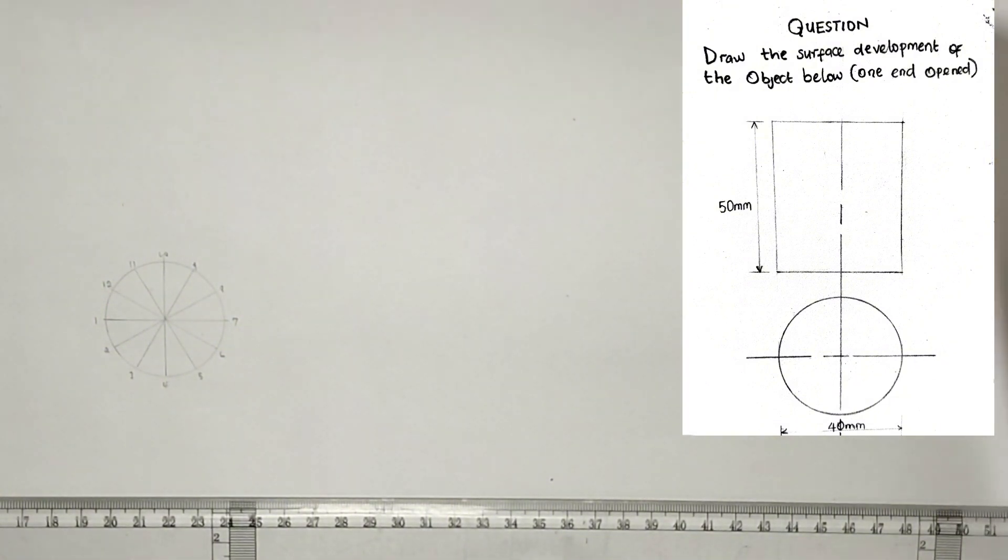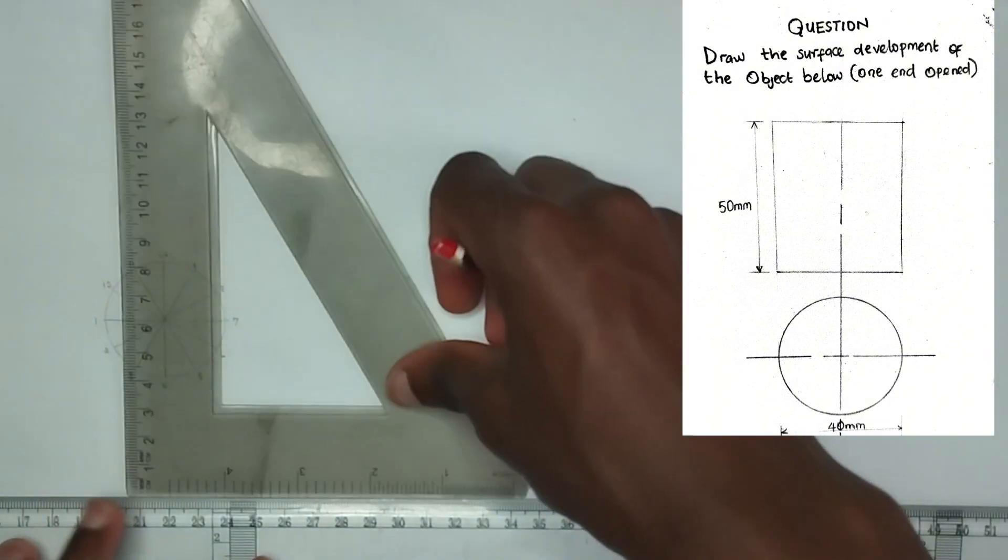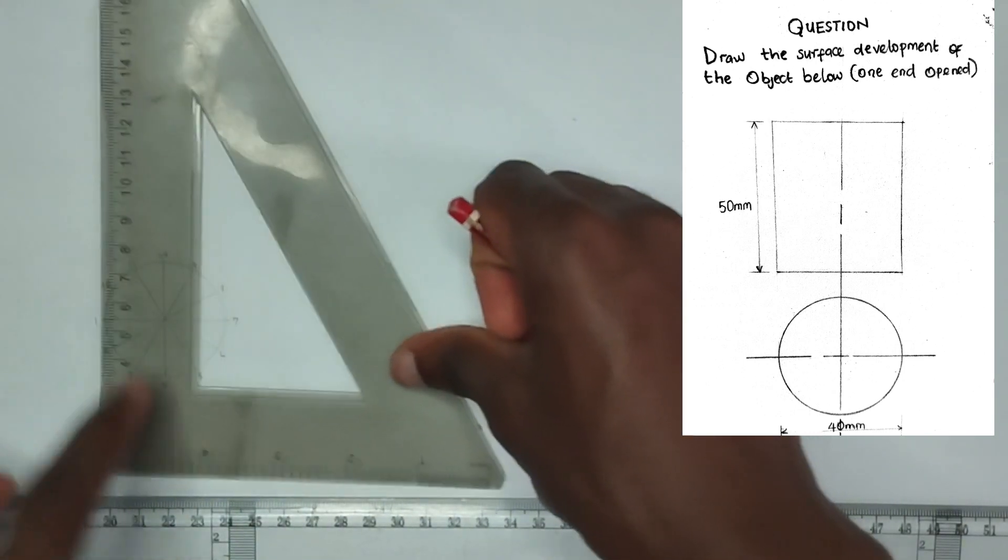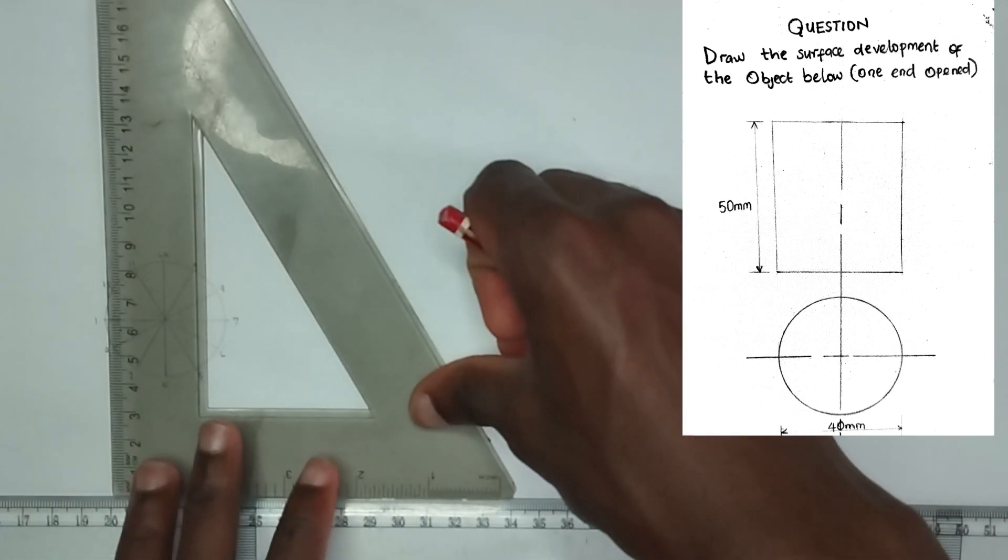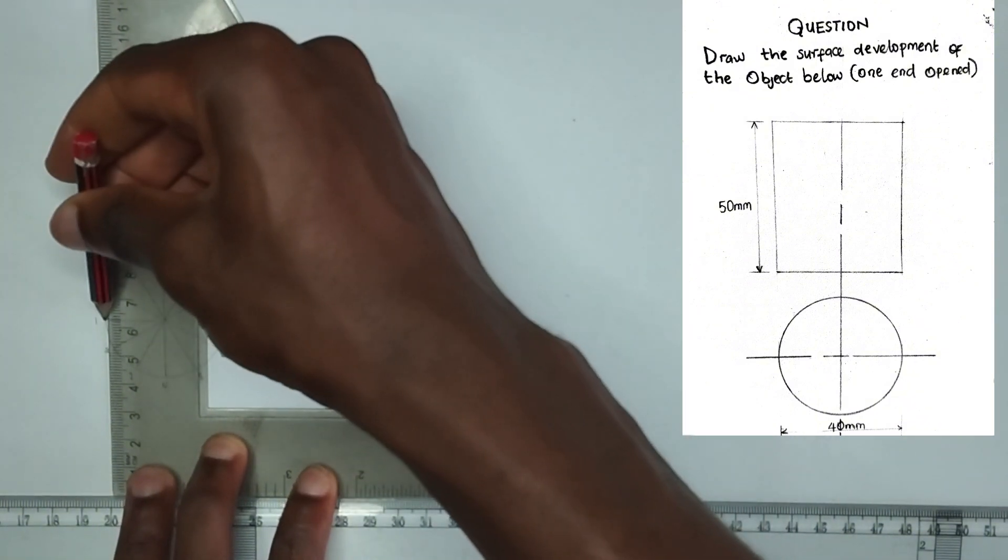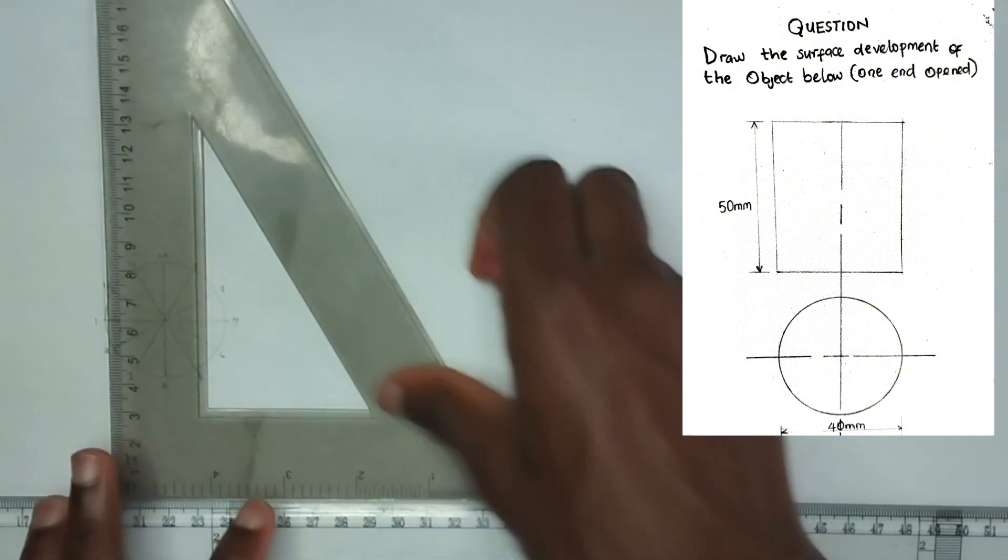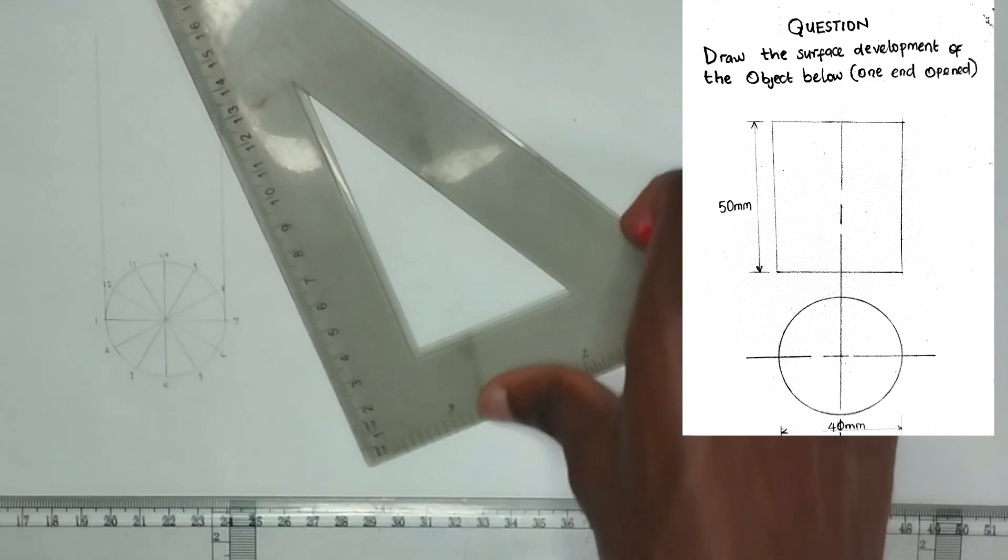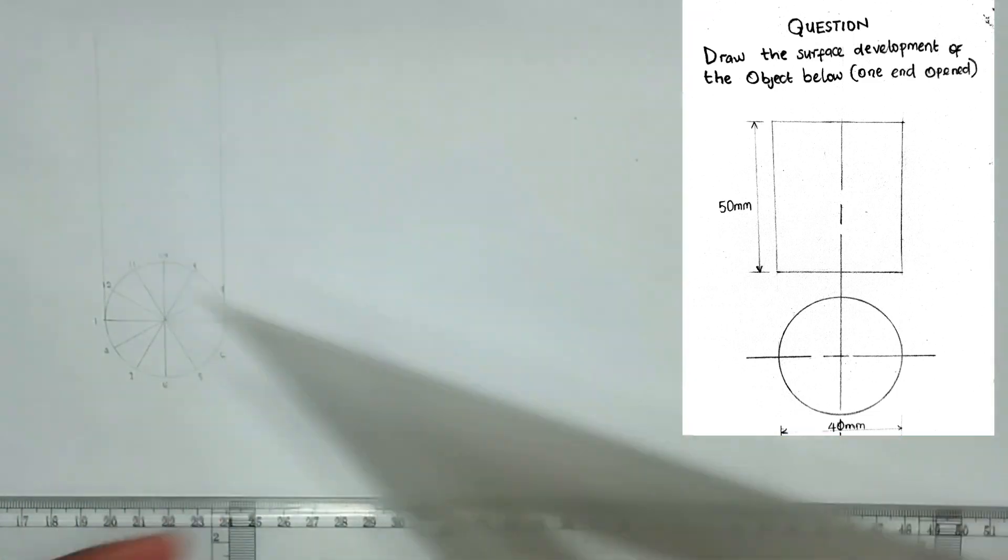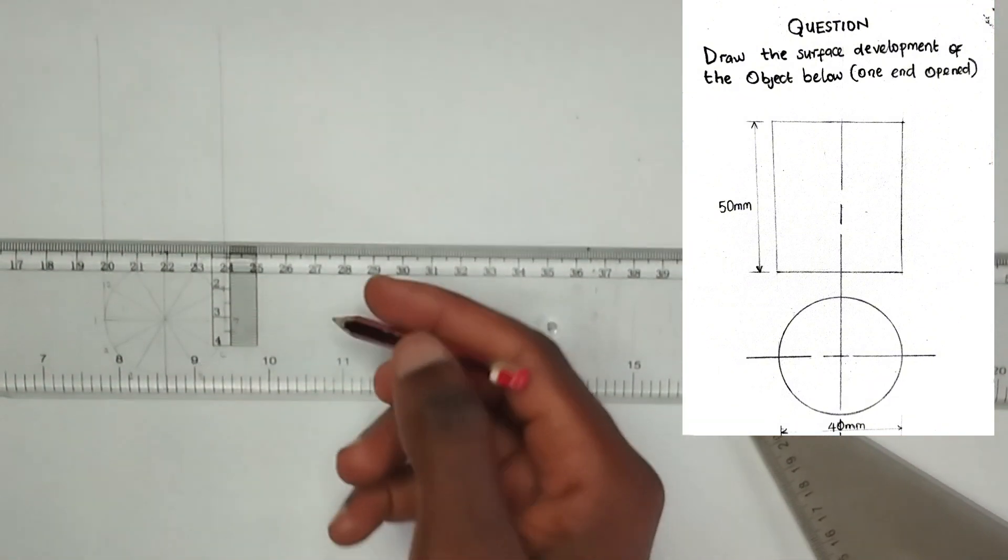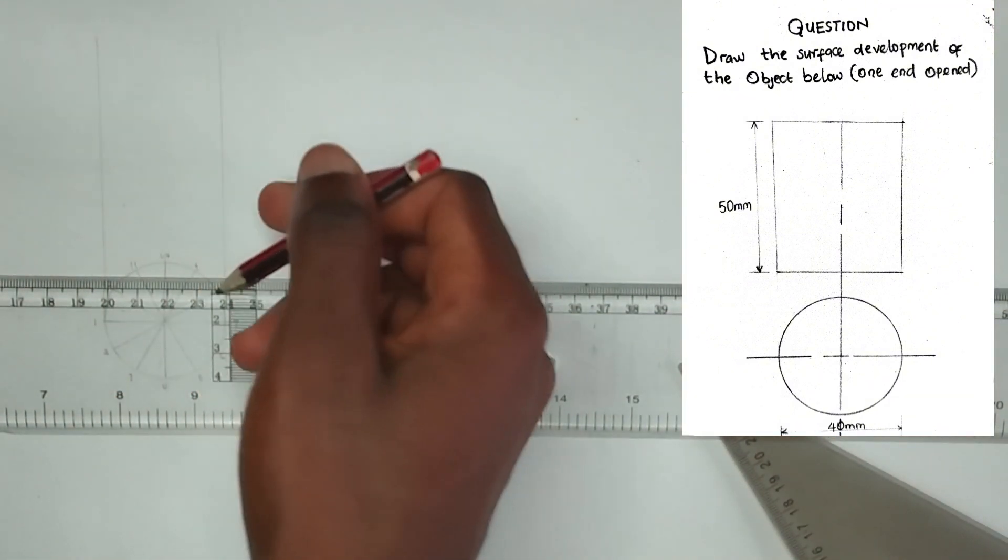So now what we are going to do next is to pick our set-square then project vertical lines upward from the edge of the circle. Then I'm going to project from this point first like this, then project from this point also like this in this manner. And we have been given the height of the cylinder as we can see in the question to be 50 millimeter. So from any point just make sure...